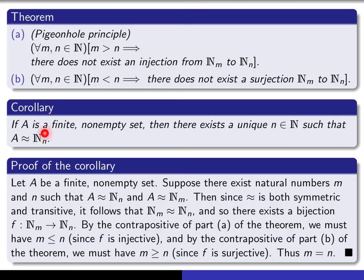So that means the thing that we're calling n here is unique, because any other one for which you could do it turns out to be equal to n.